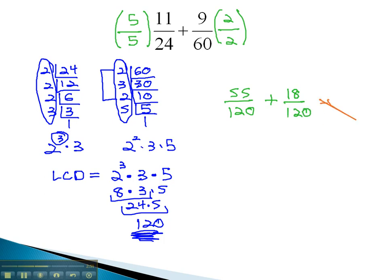And finally, 55 plus 18 is 73 over 120. This fraction doesn't reduce, and so we have our final solution.